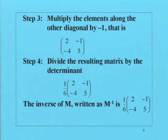Step 3: Multiply the elements along the other diagonal by minus 1. That is, you will have minus 1 on the top row to the right and minus 4 on the first element in the bottom row. Instead of saying multiply by minus 1, we say just change the sign to the opposite.